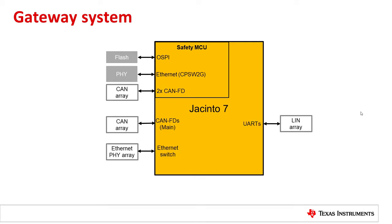We then have the LIN array that can be connected to the UART modules on the Jacinto 7 platform. Traffic bridging between CAN, Ethernet, and LIN interfaces can be offloaded to firmware running on a real-time processing core. This can be one of the R5 instances in the safety MCU island or from the main domain.